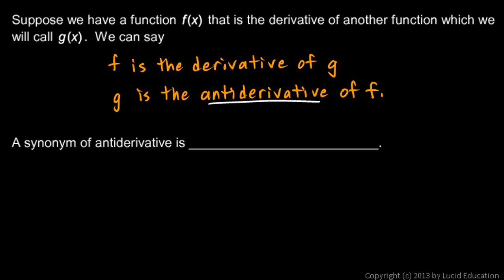So if we have some function f that is the derivative of function g, let's draw this. Let's say there's some function here which we call g, and maybe it's a cubic, and it will have a derivative that is a parabola. If f is the derivative of g, then g is the antiderivative of f. So antidifferentiation is the reverse process of differentiation.